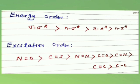Sigma to sigma star transition occurs in saturated alkene compounds; it is less intensive. N to sigma star transition occurs, for example, in unsaturated alkene ketones. Aromatic or aliphatic compounds containing double bonds or triple bonds show pi to pi star transitions. N to pi star transition is found in heterocyclic compounds like pyridine or aliphatic ketones. N to pi star gives more intense peaks but is a forbidden transition of low energy.